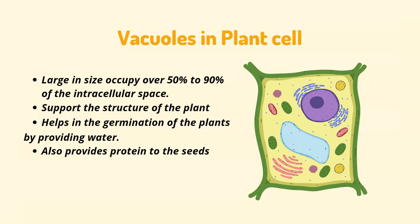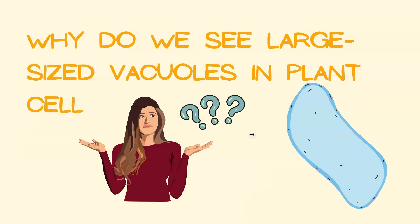Let us understand more about vacuoles in a plant cell. Vacuoles in a plant cell are large in size, and they generally occupy over 50 to 90% of the cellular volume. They support the structure of the plant, help in germination of the plants by providing water, and also provide protein to the seeds for their growth. Why do we see large-sized vacuoles in plant cells?